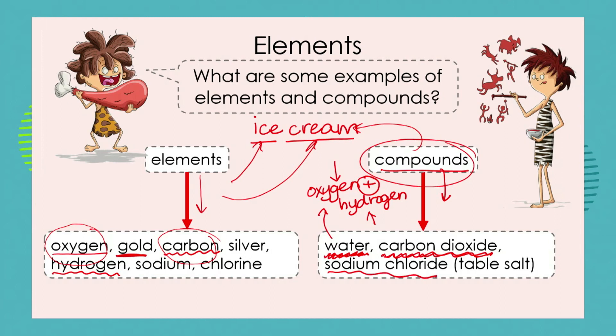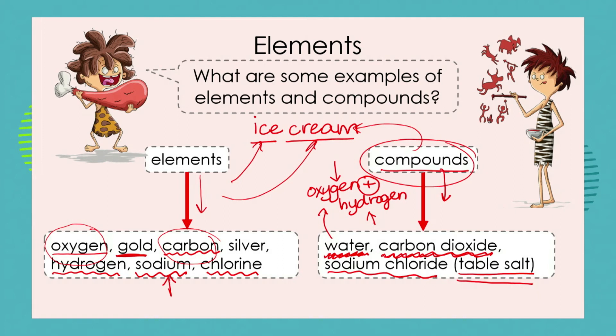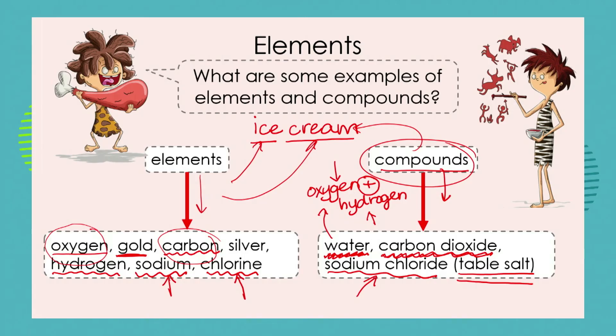Sodium chloride is another compound — you recognize it as table salt, the stuff you shake on your food. Sodium and chlorine are two elements with different properties, but when they are combined chemically they make sodium chloride, which has completely different properties. Do you know that sodium will explode in water? Have you ever seen sodium chloride exploding when you add it to food? Of course not. Chlorine by itself is a poisonous gas — is your table salt poisonous? Of course not. This is a wonderful example of two elements combining to make a brand new substance with completely different chemical properties.